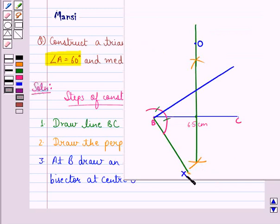Let us name this point X. So now, we draw an angle of 90 degrees at B, X. And let the point where this meets the perpendicular bisector be called as O.